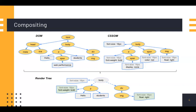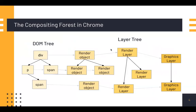The engine will also parse the style data, both in external CSS files and in style elements. Styling information together with visual instructions in the HTML will be used to create a render tree. The render tree contains rectangles with visual attributes like colors and dimensions. In Chrome, there are actually several different types of layers connected with the DOM tree — render layer, graphic layers — and a render object which connects the DOM tree with the layer tree.